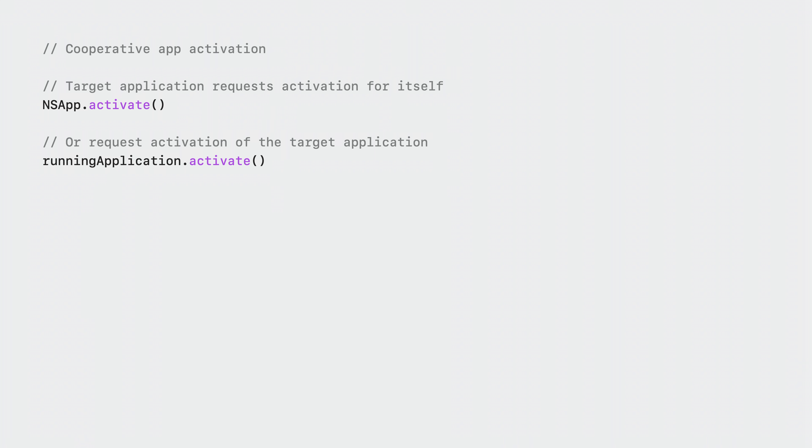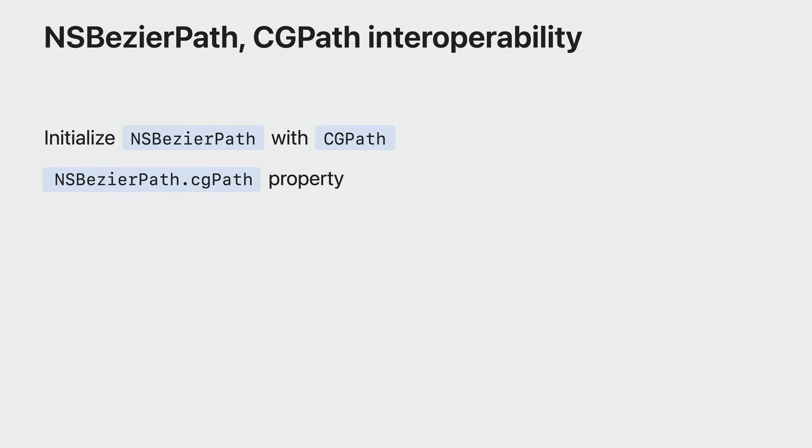That's the new cooperative app activation behavior. We've also made significant changes and added new API to graphics and drawing in macOS Sonoma. You can now create CGPaths from NSBezierPaths and vice versa. NSBezierPath gains a new initCGPath initializer and a CGPath property. Initting, setting, or getting the CGPath always results in a copy of the path — further mutations of the NSBezierPath are not reflected in the original or copy CGPath instances, meaning they are not toll-free bridged.